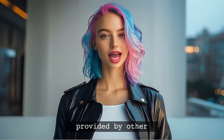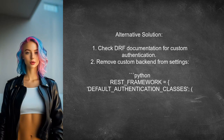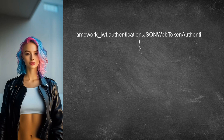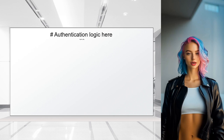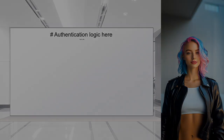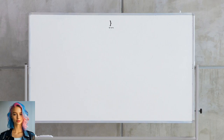Let's look at answers provided by other users. One user suggests checking the Django REST Framework documentation for custom authentication backends. They believe the custom backend might be causing issues and recommend removing it from the DRF settings to use only JWT authentication. Alternatively, they recommend fixing the custom backend by extending BaseAuthentication and ensuring it returns a tuple, providing a revised version that uses email or mobile for authentication. They also suggest updating the DRF settings to include the fixed backend for proper authentication for both the API and the Django admin site.